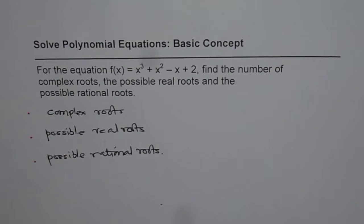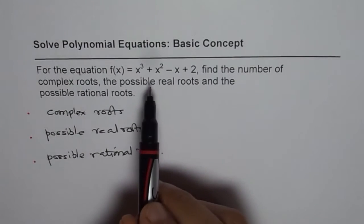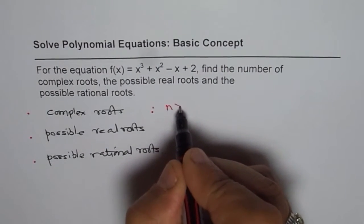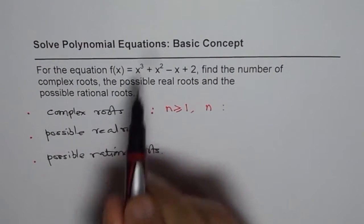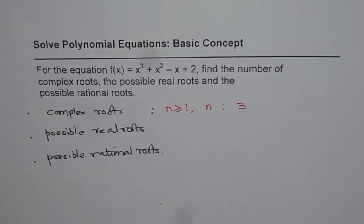Well, the fundamental theorem is that the number of complex roots for any polynomial with degree n greater than or equal to 1 is n. So in this particular case, the degree is 3 and therefore we will always have three complex roots.